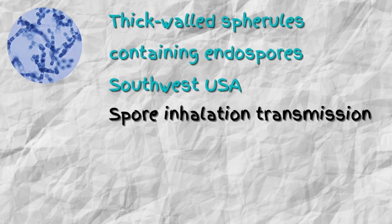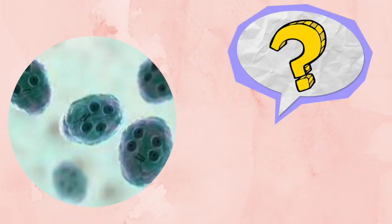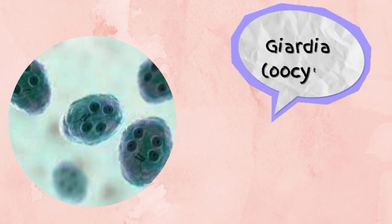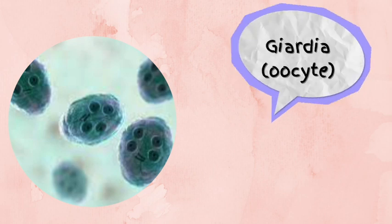What organism can you see right here? This is Giardia — specifically, this is showing you the cysts of Giardia. It's very high yield to know what the cysts and the trophozoites look like for Giardia. This picture is showing you the trophozoite for Giardia. It's a commonly tested organism, so know all the different ways it can be seen.